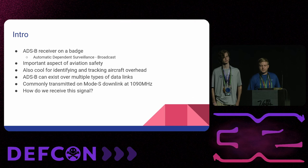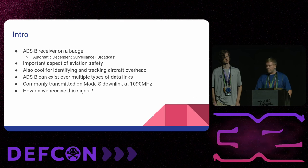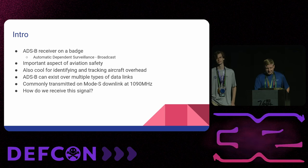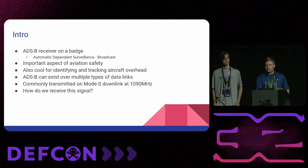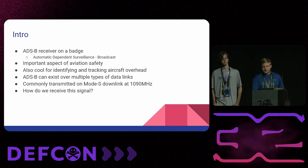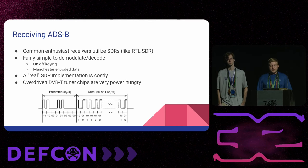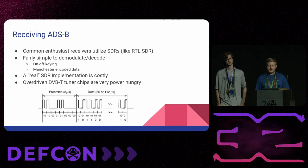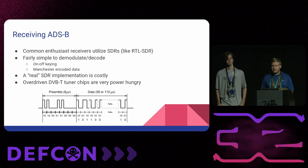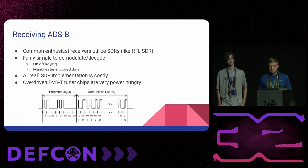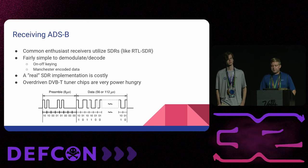ADSB can exist over multiple types of data links, but the most common physical medium is the Mode S downlink at 1090 MHz. The protocol and modulation is actually fairly simple to demodulate and decode — it's on-off keyed, which is effectively digital amplitude modulation: it's either on or off, you're either getting RF or you're not on 1090 MHz. The data bits themselves are Manchester encoded, meaning the data exists in the transitions between one and zero, or zero and one.